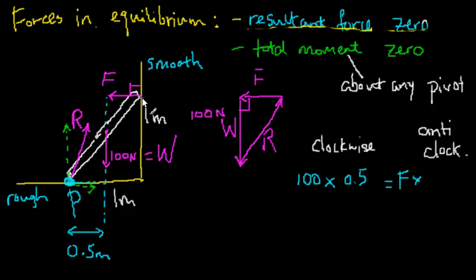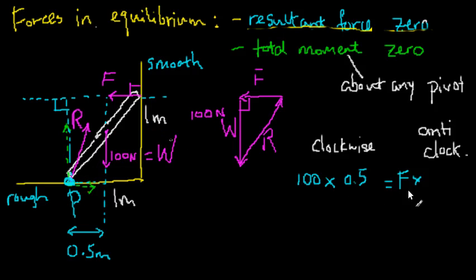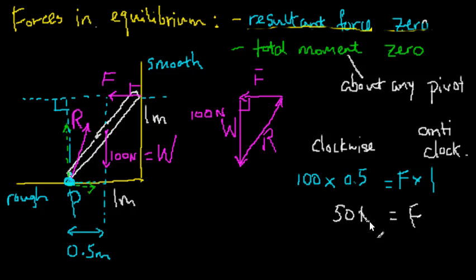The line of action of F is horizontal, and the perpendicular distance from pivot P to that line is just the 1 meter given. So we have: 100 × 0.5 = F × 1. On the right side, F times 1 is just F. On the left side, 0.5 times 100 is 50. Therefore F equals 50 newtons. We have just found F using the total moment equals zero condition.